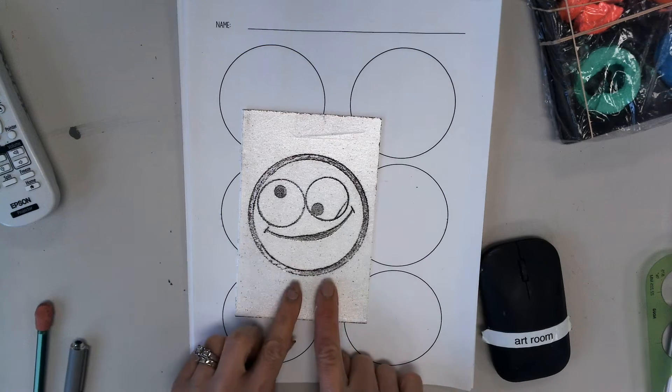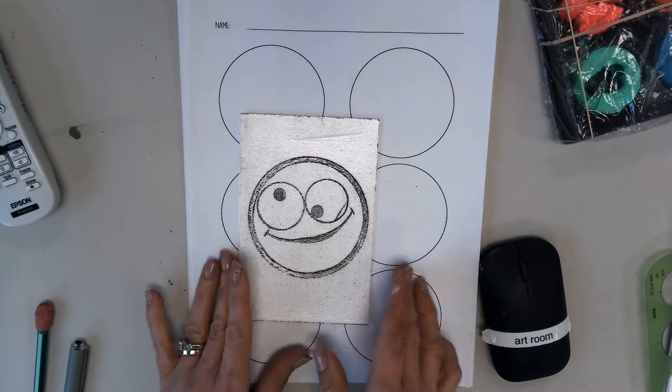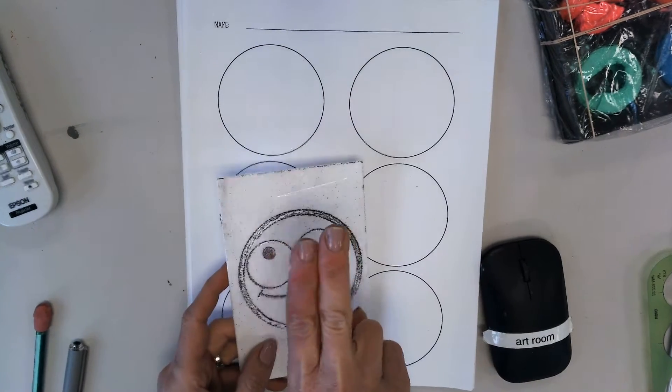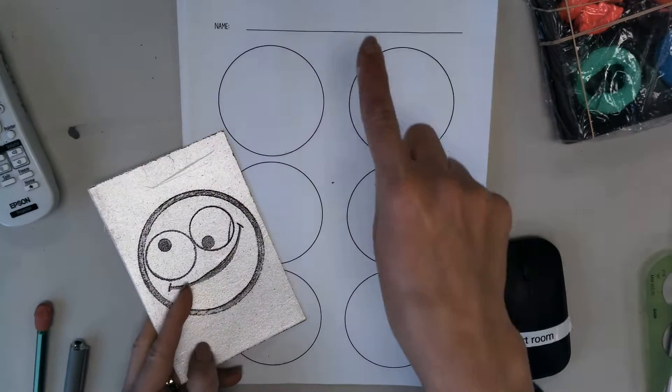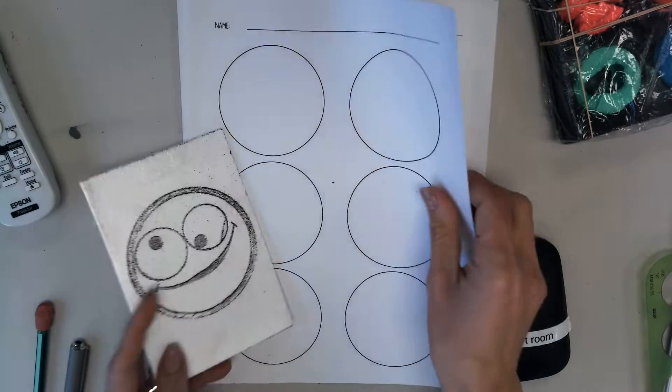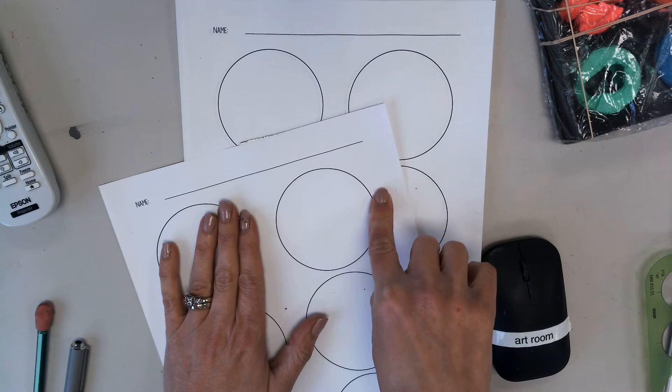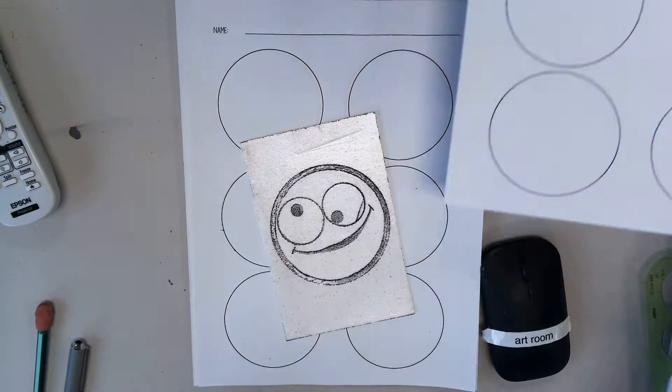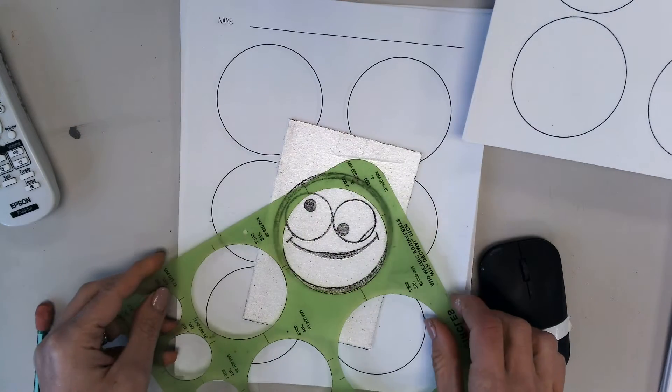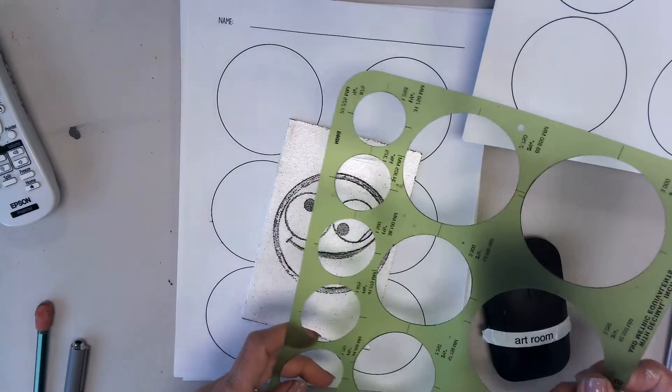Then you're going to transfer your drawing to a piece of styrofoam. There are two ways to do this. Number one, you can cut out your drawing, tape it to the styrofoam and press and trace it. That's method number one. Method number two is you can use a circle tracer to draw it again.